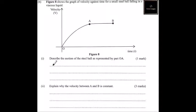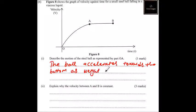This happens because the weight of the ball is more than the upthrust and the viscous drag. Viscous drag is the resistance offered by the viscous liquid. So we can answer this: the ball accelerates towards the bottom as weight is greater than the viscous force and the upthrust.